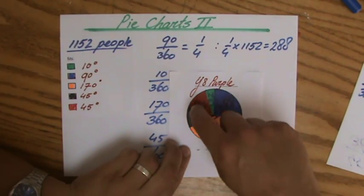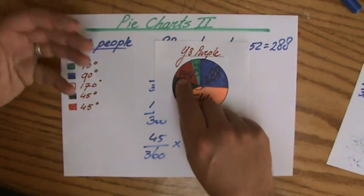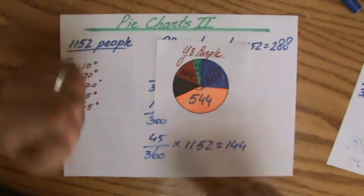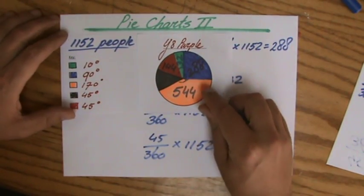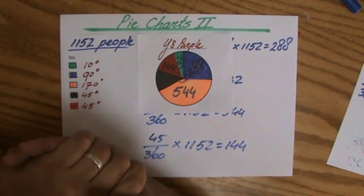And if you would add these numbers up - 544 plus 144 plus 144 plus 32 plus 288 - how much should you get then? What should your answer be? That should be 1152 again, the total amount of people asked.